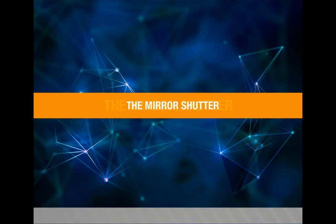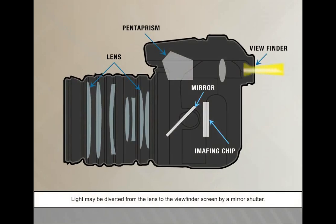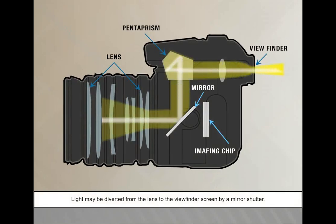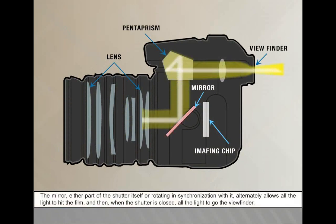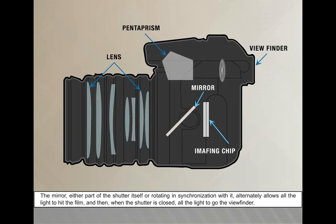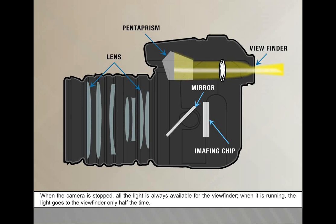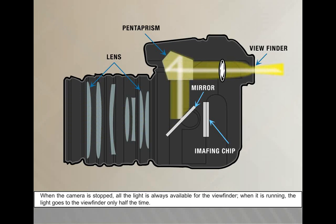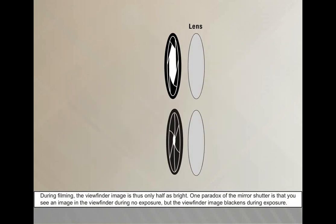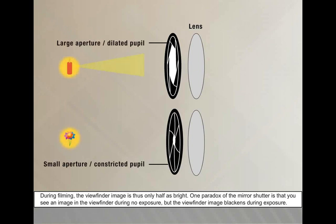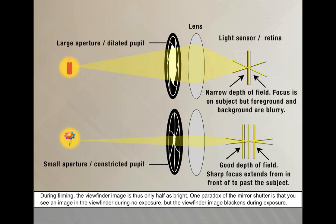Mirror shutter. Light may be diverted from the lens to the viewfinder screen by a mirror shutter. The mirror — either part of the shutter itself or rotating in synchronization with it — alternately allows all the light to hit the film and then, when the shutter is closed, all the light to go to the viewfinder. When the camera is stopped, all the light is always available for the viewfinder. When it is running, the light goes to the viewfinder only half the time, making the viewfinder image half as bright during filming. One paradox of the mirror shutter is that you see an image in the viewfinder during no exposure but the viewfinder image blackens during exposure.